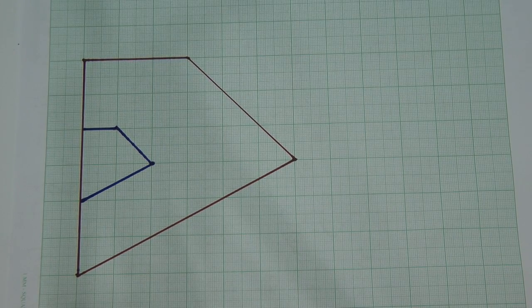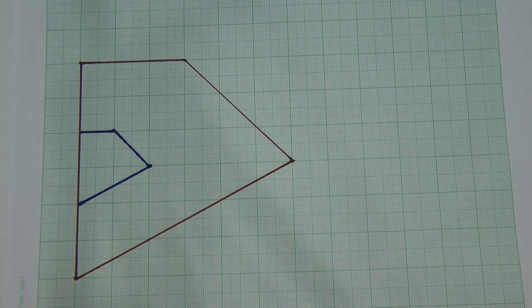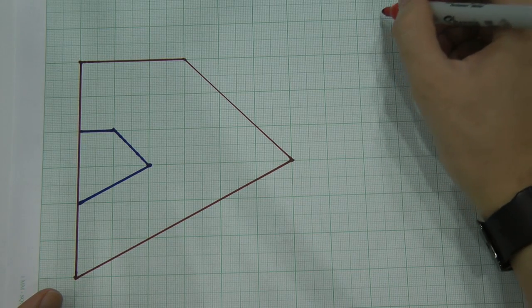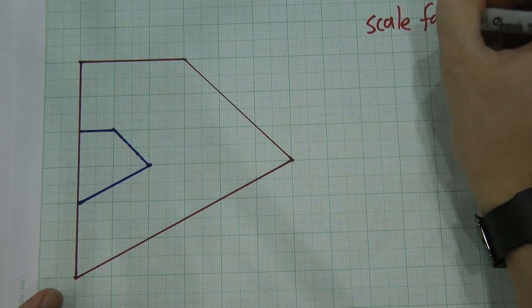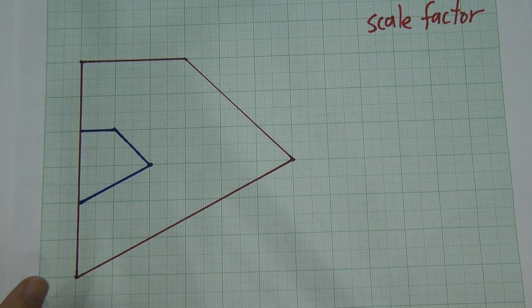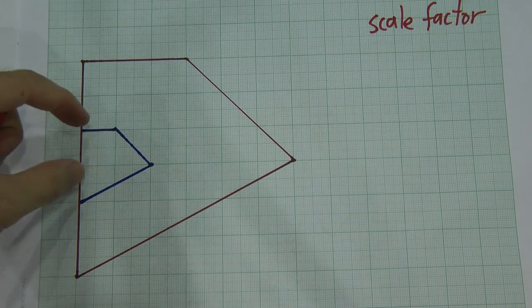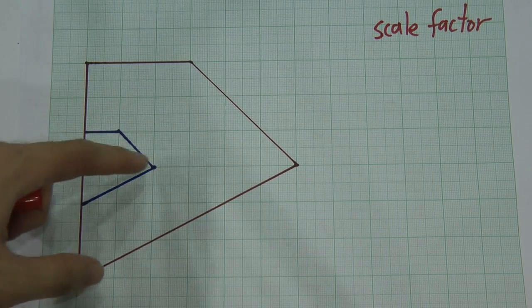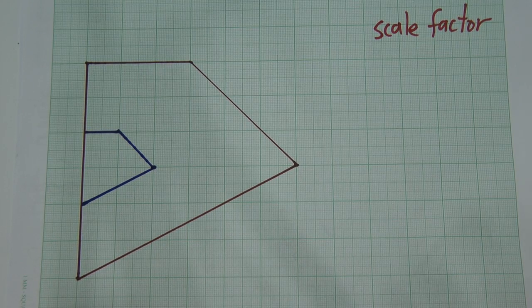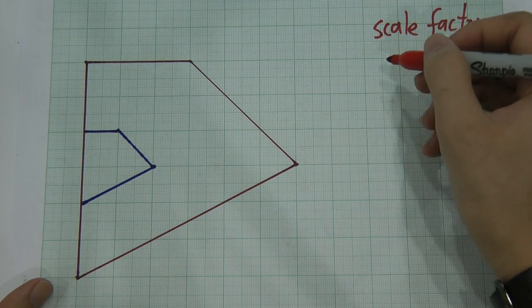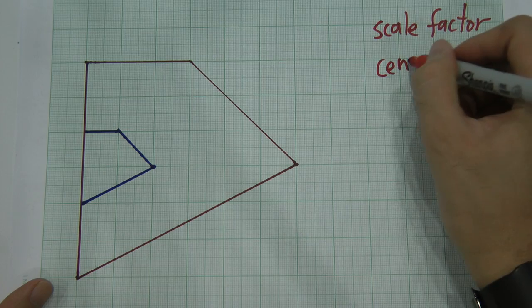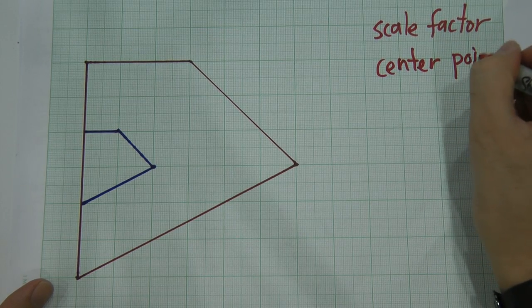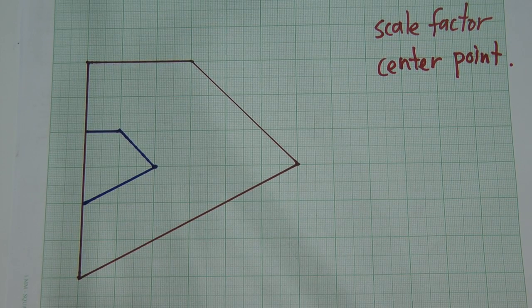This is another video for transformation — this one is about enlargement. Enlargement has two very important points. The first is the scale factor, which tells you how big the object is actually enlarged. The second is the center point — where is the center point for the enlargement. Both of these are very important for enlargement.